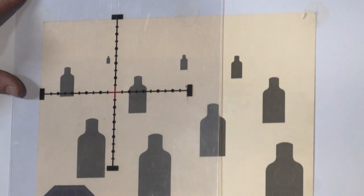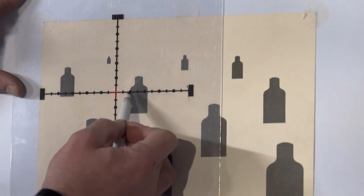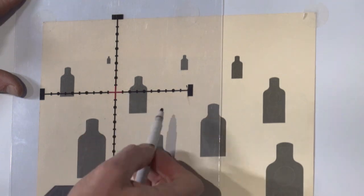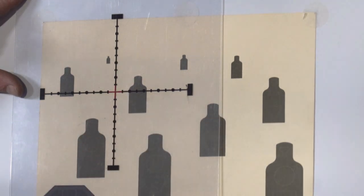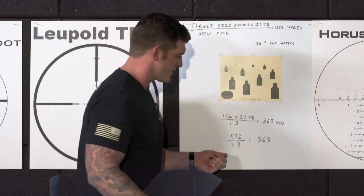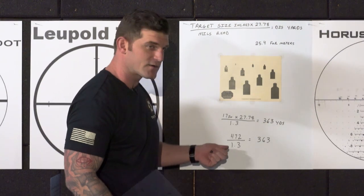So we got 1.3 mils here. Again, we're still on a 17 inch wide target. So we're going to use the same information for our calculation. But this is just the difference of what 1.3 looks like on this reticle versus the other reticle. But it's the same exact number for our equation.